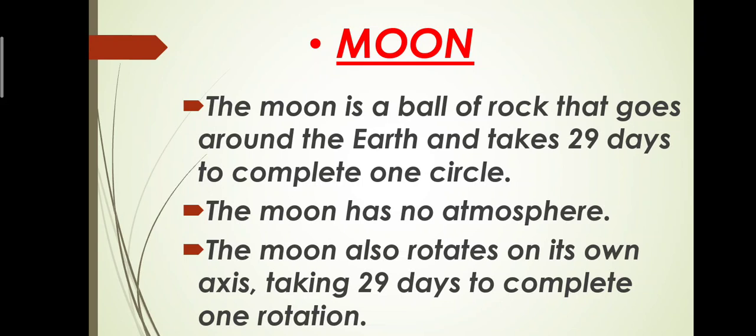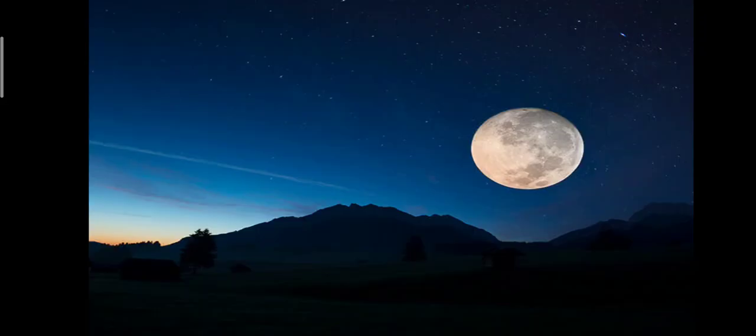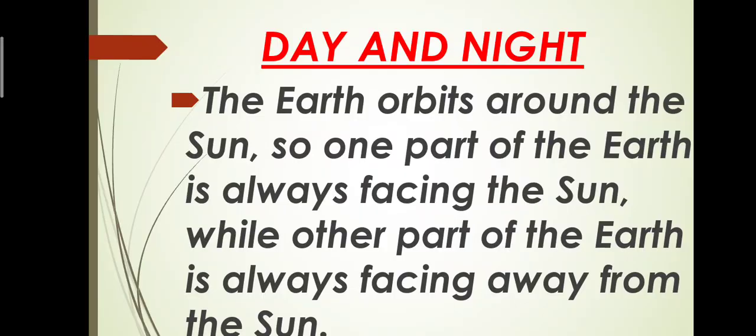Let me show you the simple diagram of moon. This is a complete moon. Now moving on towards day and night. What is the procedure of day and night? How does this change occur? What is the phenomena behind this change?